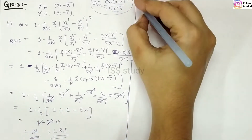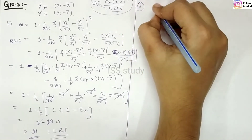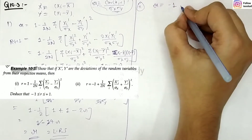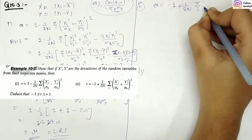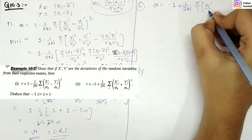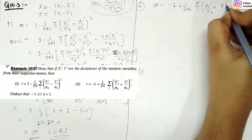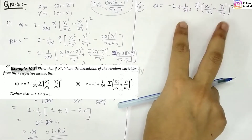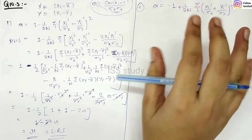Now, similarly, here is the second proof. It is given that r equals minus 1 plus 1 upon 2n, summation over i of (x_i' upon σ_x plus y_i' upon σ_y) whole square. This value should also equal r, and we can solve it in a similar pattern.